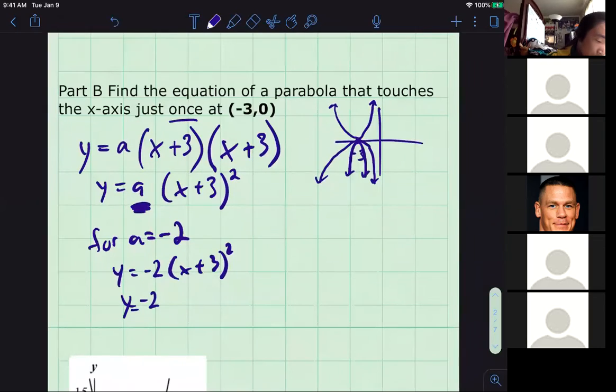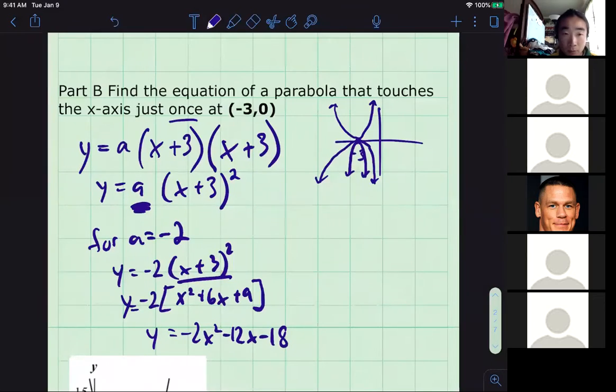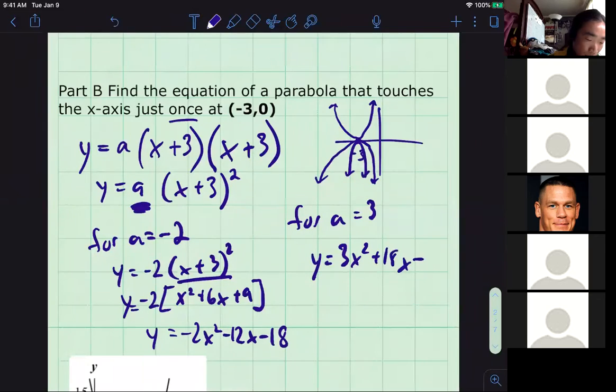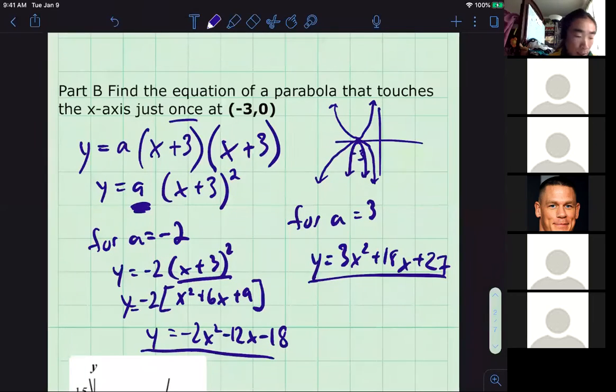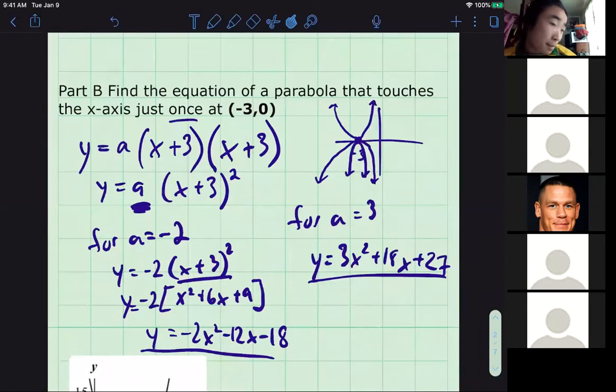Just like from before, we could choose different a values. For example, for a equals negative 2, you have y equals negative 2 times (x plus 3) squared. For me, I like doing this part first: x squared plus 6x plus 9. And then y equals negative 2x squared minus 12x minus 18. For a equals positive 3, you get another 3x squared plus 18x plus 27, another quadratic equation in standard form. It opens downwards, opens upwards, really wide and really narrow because of this a value again.